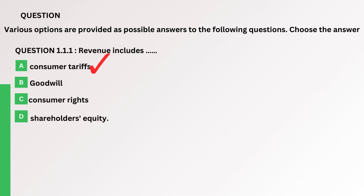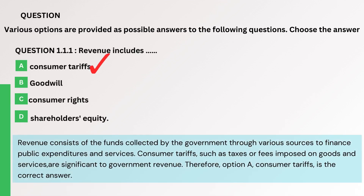Consumer tariffs. Revenue consists of the funds collected by the government through various sources to finance public expenditures and services. Consumer tariffs, such as taxes or fees imposed on goods and services, are significant to government revenue. Therefore, option A, Consumer tariffs, is the correct answer.